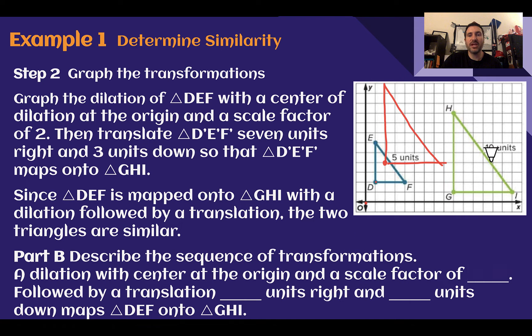Now how can I get my dilation to go to my final image? I would need to dilate it from the center scale factor of 2, which is what I did, followed by a translation that would go 7 units to the right and 3 units down. That would be what I need to do to map DEF onto GHI.